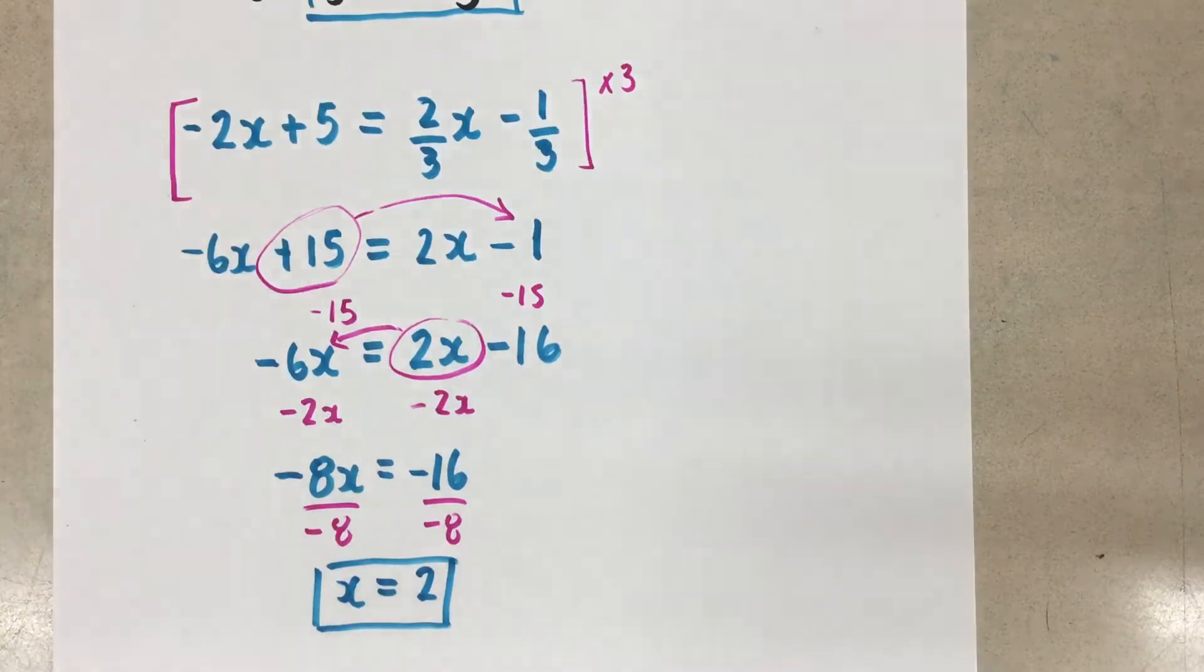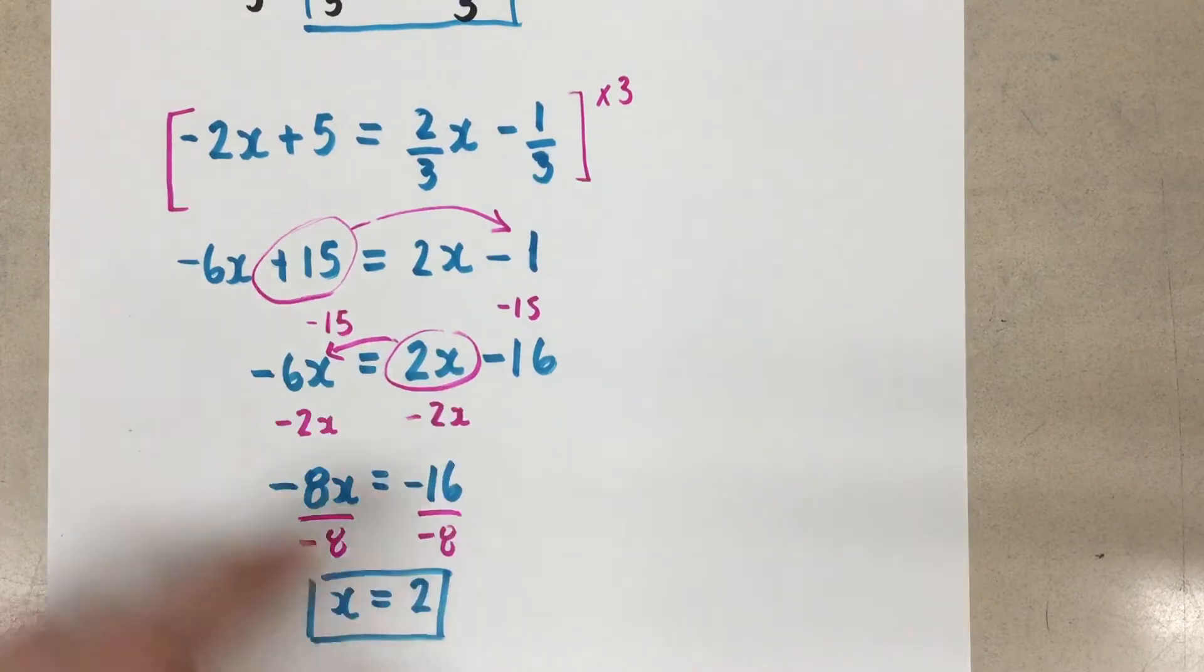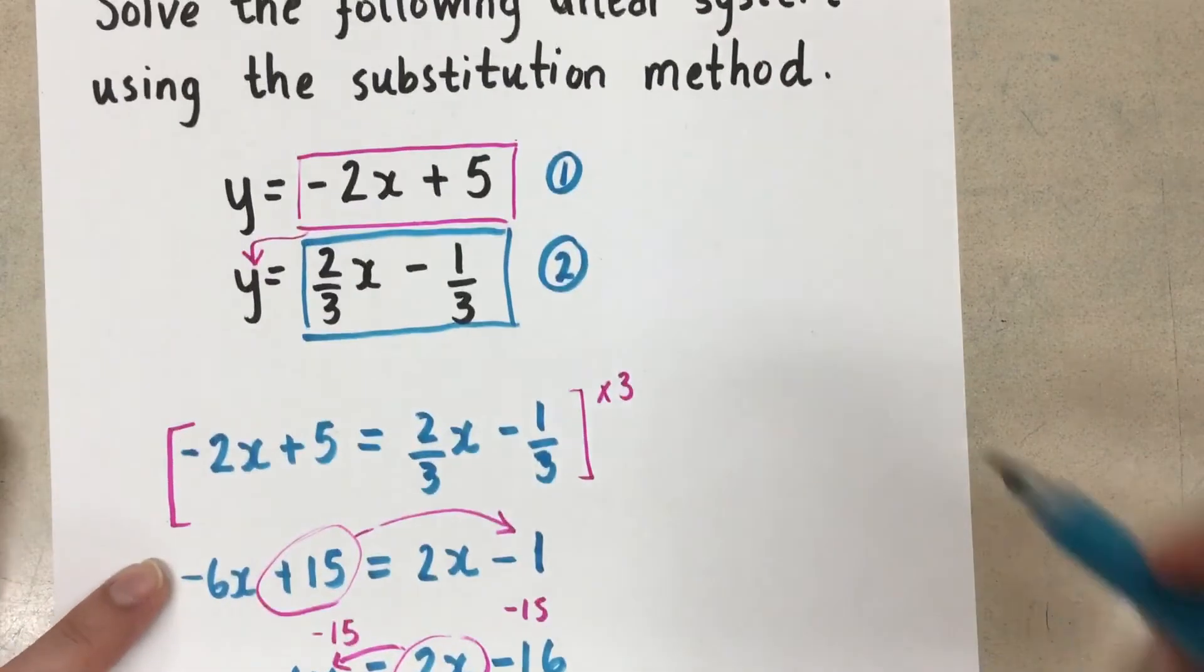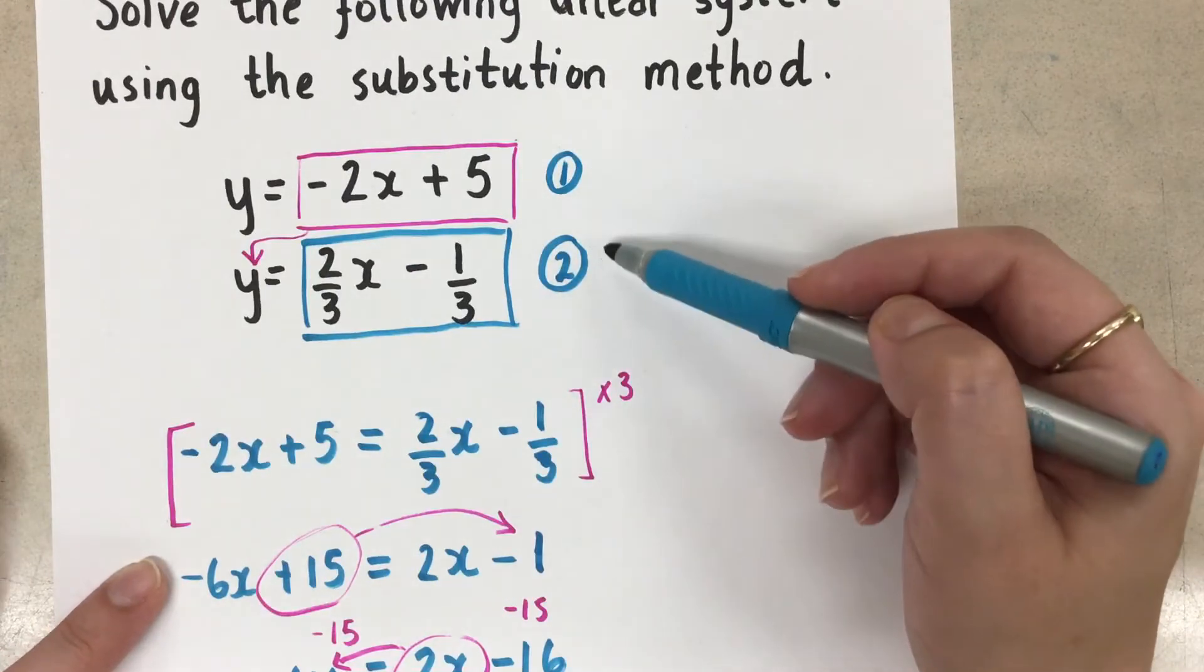So there's the x coordinate of our point of intersection. But a point of intersection needs an x coordinate and a y coordinate. So we are going to take that x now and sub it back into one of the original equations in the system.